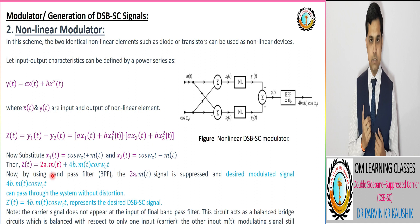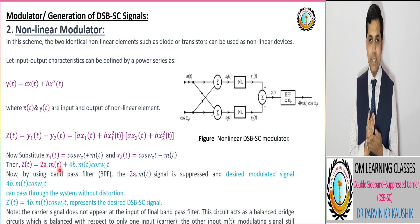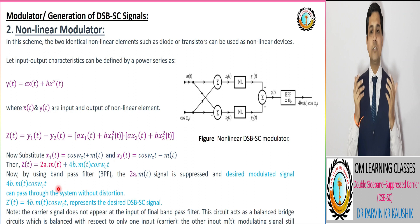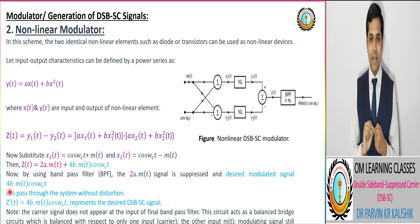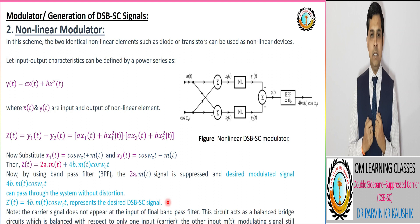As per our modulator, we require only the DSB-SC signal. So we utilize a band pass filter centered with respect to our carrier frequency. By utilizing the band pass filter, we get our desired modulated DSB-SC signal corresponding to 4B·m(t)·cos(ωC·t), and the term corresponding to the modulating signal is filtered out by the band pass filter. This non-linear modulator is known as the single balanced modulator.